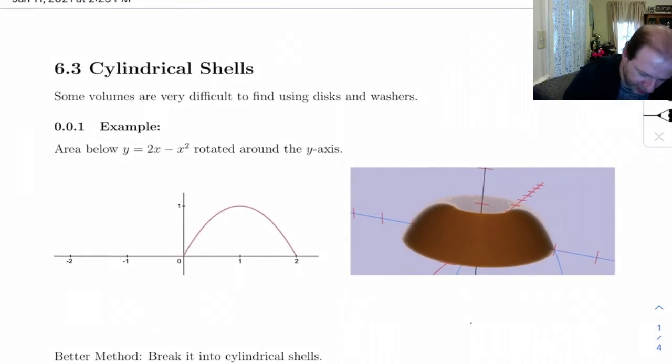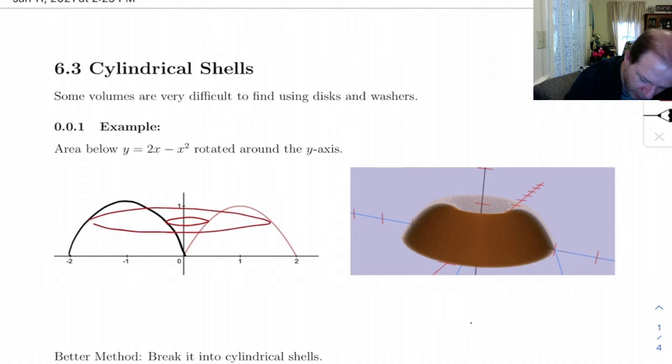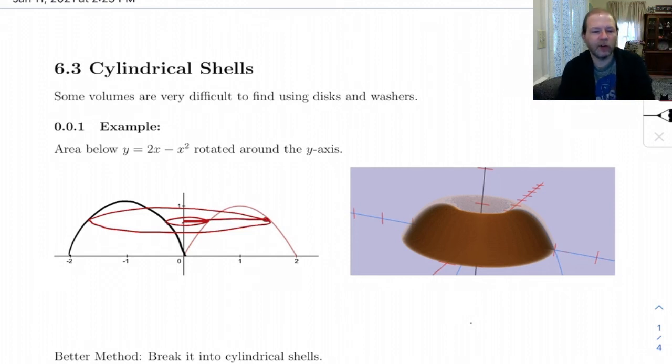Now, the problem with this is if we draw in the other side, if we start trying to draw in a washer, because this is going to have a hole in it, determining the two radii is going to be difficult. The reason is you'd have to solve this equation out here for x, and you're going to get two solutions, and you have to be mindful of which one is which, and it's just not a good way to do it.